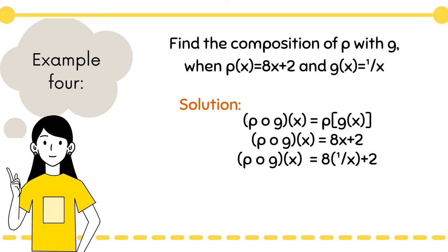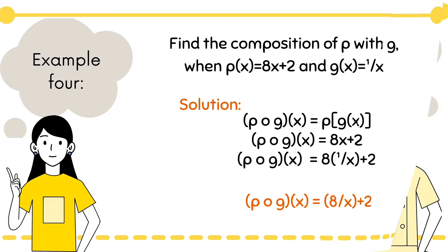Simplify 8 times (1/x) + 2, which brings us to our answer. The composition of p with g is 8/x + 2.